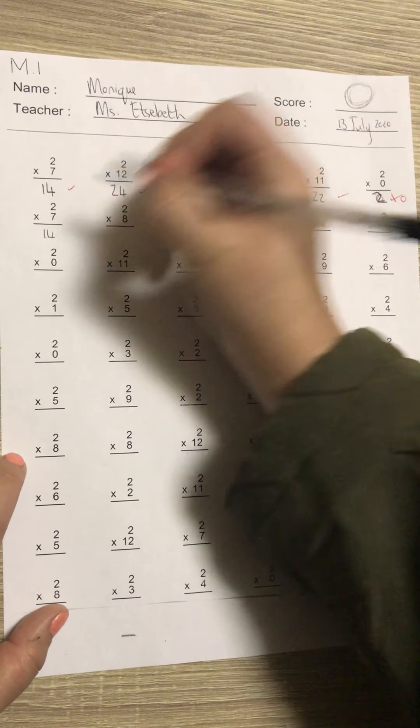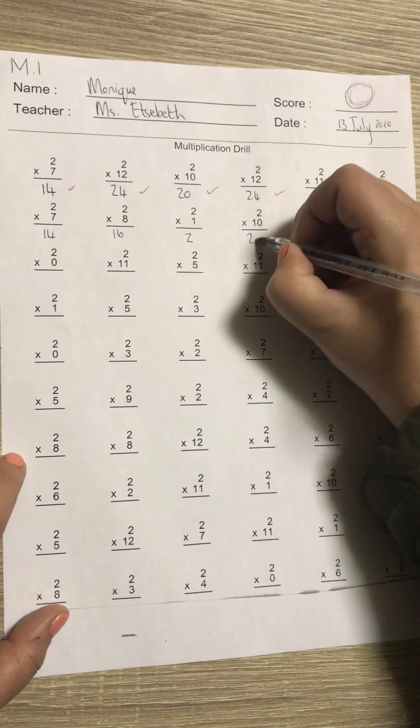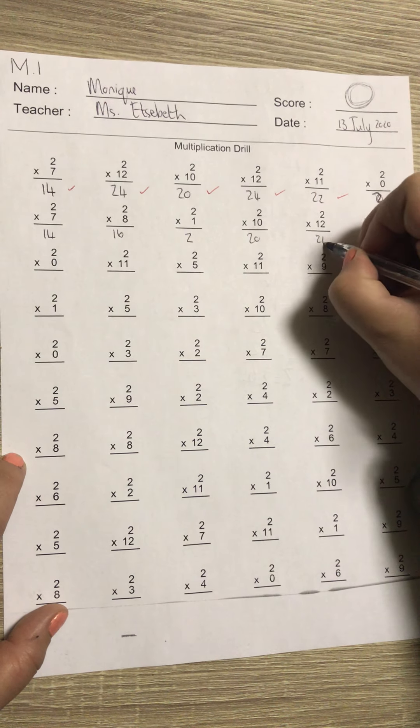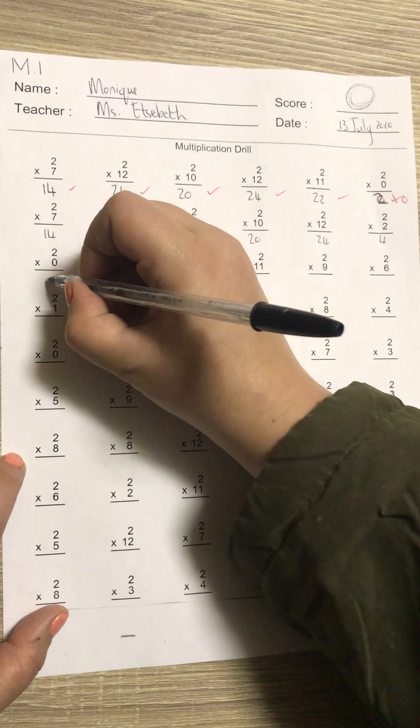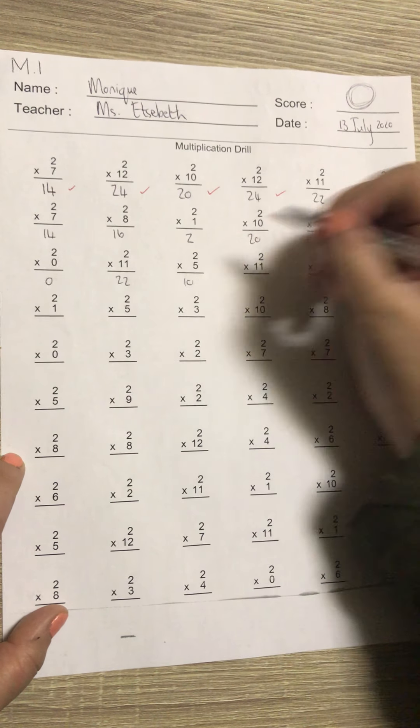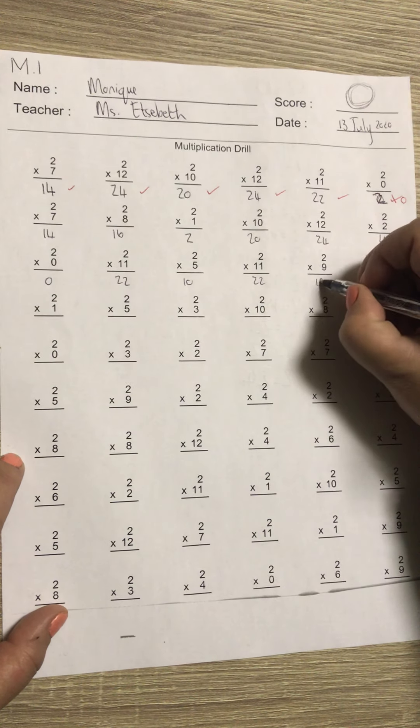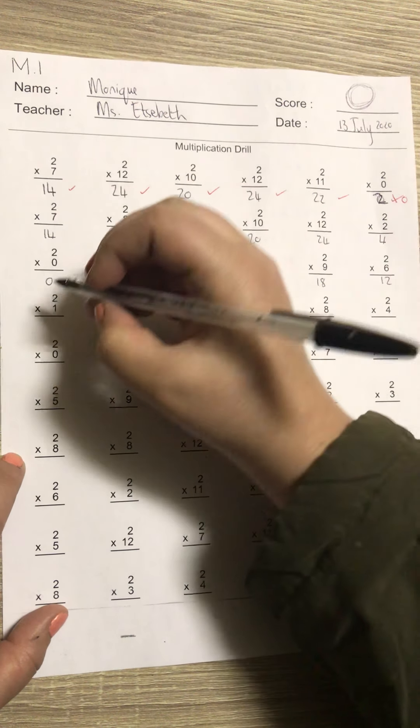Next line: two times seven is 14, two times eight is 16, two times one is two, two times 10 is 20, two times 12 is 24, two times two is four. Next line: two times zero is zero, two times 11 is 22, two times five is 10, two times 11 is 22, two times nine is 18, two times six is 12.